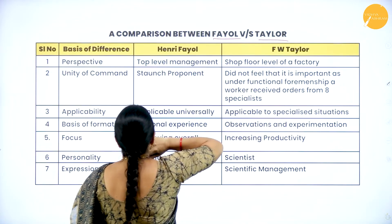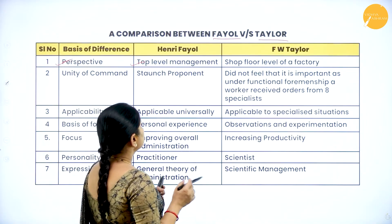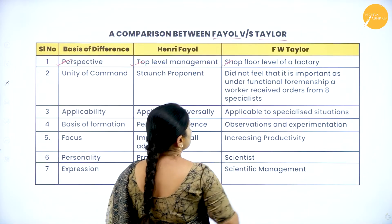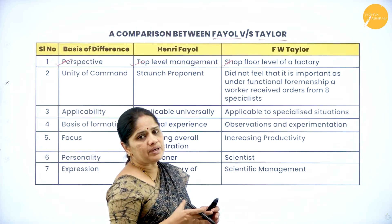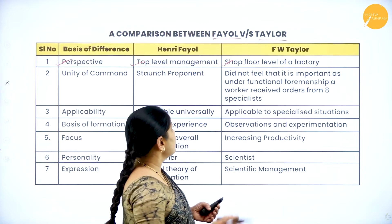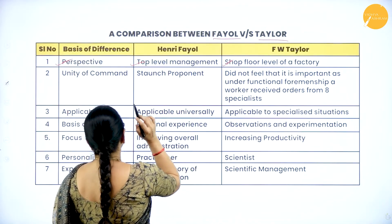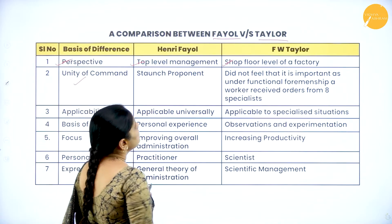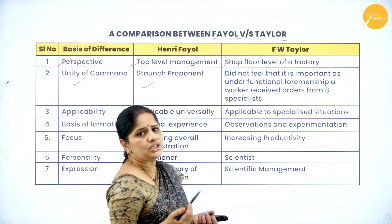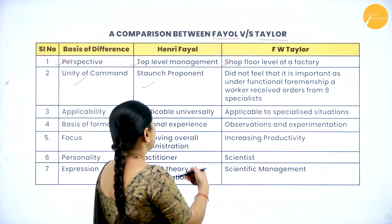In terms of perspective: Henry Fayol concentrated on top-level management, and his principles are for the working of top-level management. F.W. Taylor's principles were for the shop floor level of the factory — for the actual labor. Unity of command: Henry Fayol says there should be unity of command — one boss addressing the subordinates, one worker, one boss.